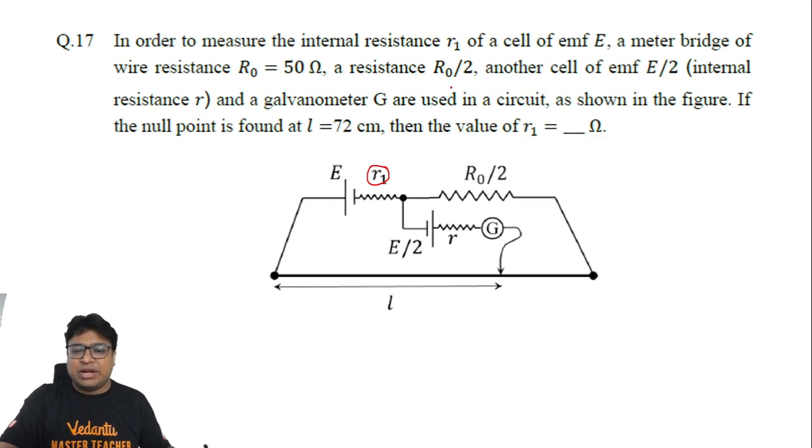A resistance of r0/2, another cell of emf E0/2 with internal resistance r, which I can see here, and a galvanometer G are used in a circuit as shown in the figure. If the null point is found at l equals 72 centimeter, then the value of r1.